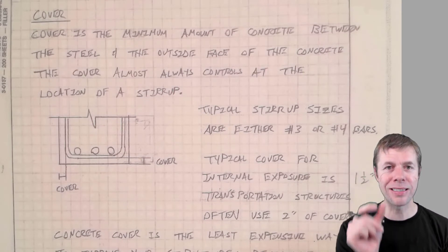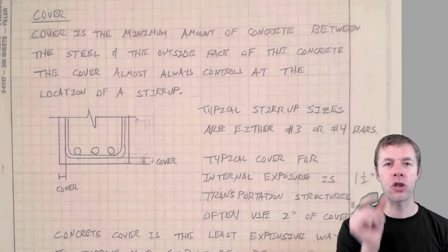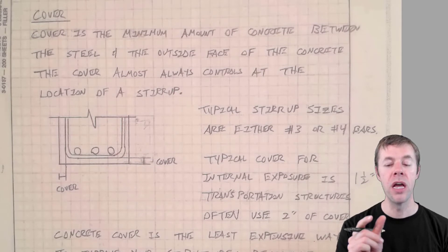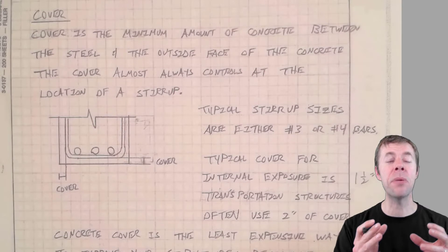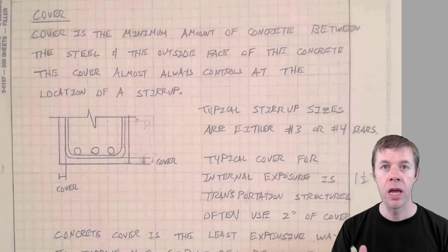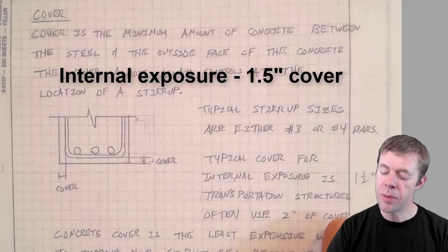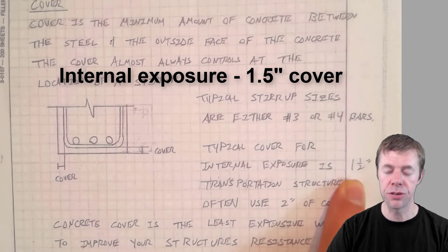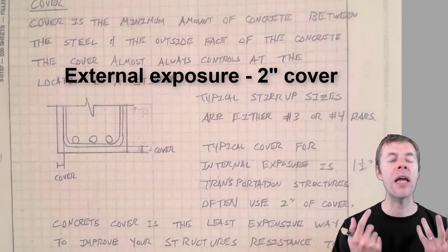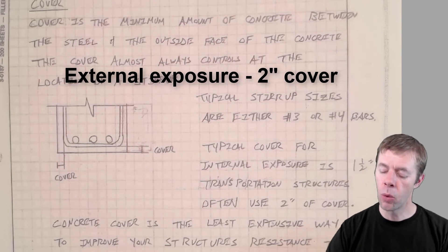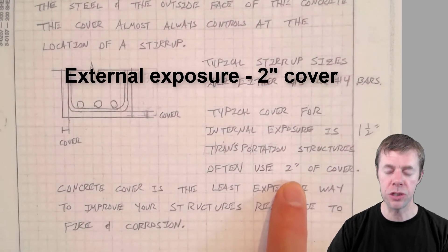So when we're constructing and designing, we have to make sure our cover is correct. That's very important in design. For example, if I'm designing a beam that's inside of a building, then I want a cover to be at least one and a half inches. If I'm designing a beam that's outside, external exposure, then I'm gonna want to cover of at least two inches.